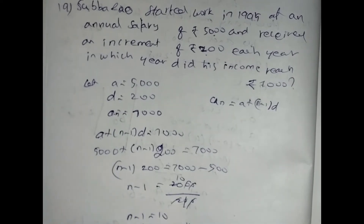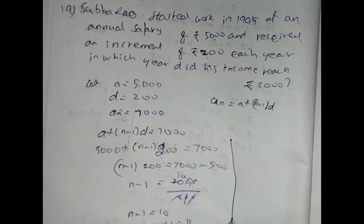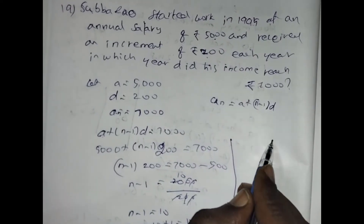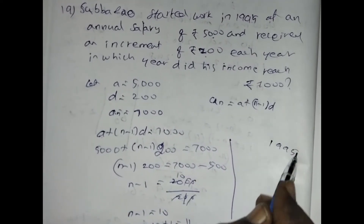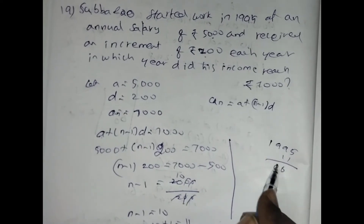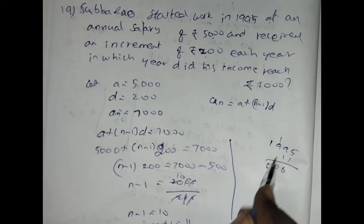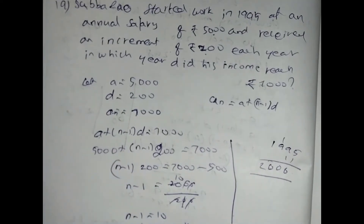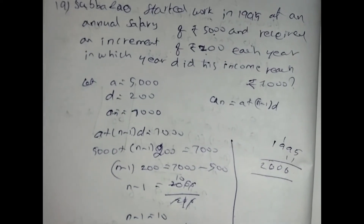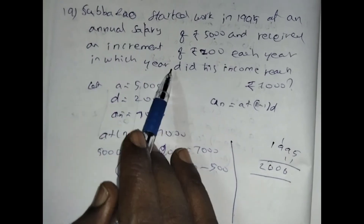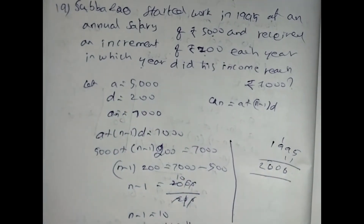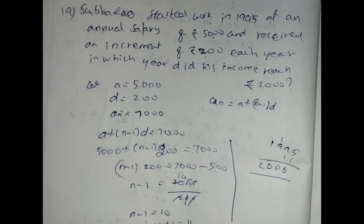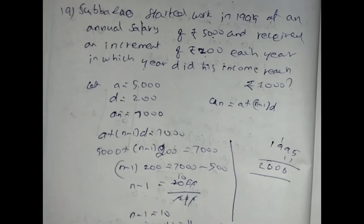So after 11 years, he will get the salary of 7000. So we can add 11 years to 1995: 1995 plus 11 equals 2006. So in the year 2006 his salary is Rs. 7000. The question asks in which year, so we write the year as 2006 and his income is Rs. 7000.